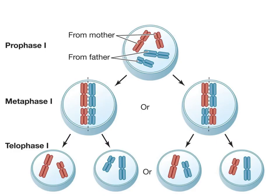This diagram shows the two different options that can happen when there are only two sets of chromosomes. On the left side, all of the mother's chromosomes line up on the left and all the father's on the right — in that case you'd end up in telophase one with one daughter cell having all the mother's and one with all the father's. Or one could line up on the opposite side, giving you one from mom and one from dad in each daughter cell. As you add more chromosomes, the number of combinations increases, because the second division splits those chromosomes in half again. This is one cause of genetic diversity in the formation of gametes.